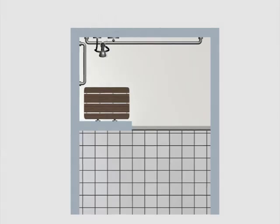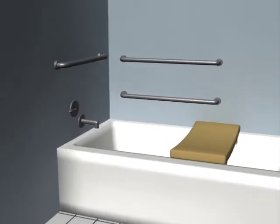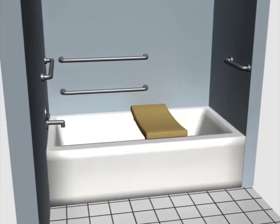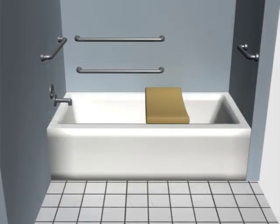The standards also address access to bathtubs. Tub controls are located toward the open side so they are usable from outside the tub. A removable in-tub seat or a permanent seat at the head is required.